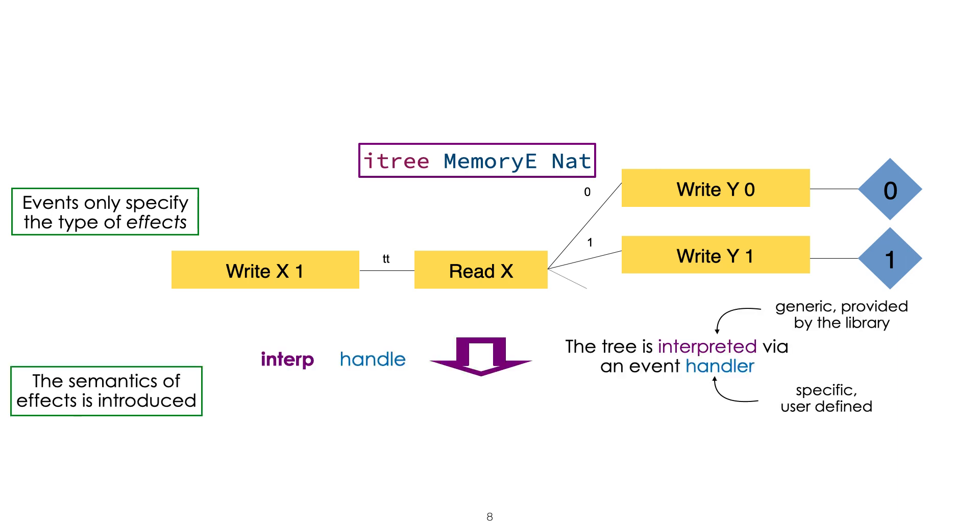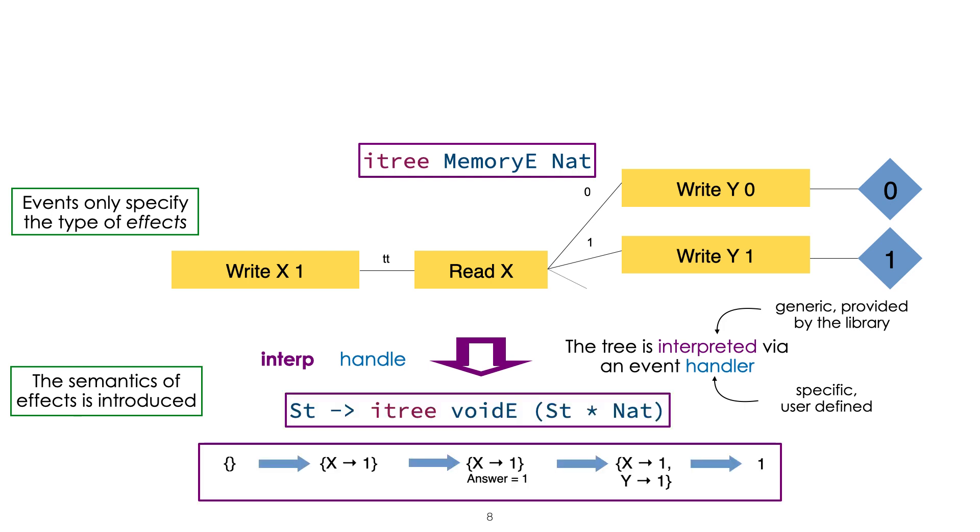That is in the second part, that is very much the style of algebraic effects, if you are familiar with that. The handler will define the semantics of these events, the semantics defined in an appropriate monad, so that, after this phase of interpretation, you obtain a computation that now can reduce. You couple that with the first phase, where the syntax of your program is represented as one of its interaction trees.